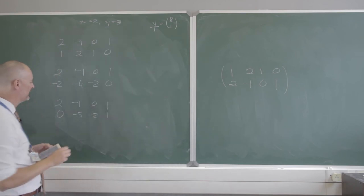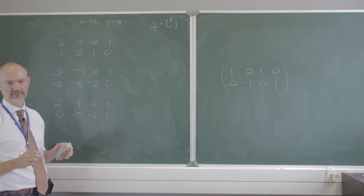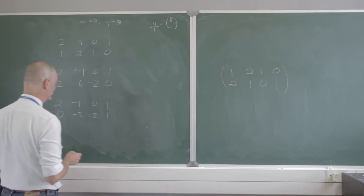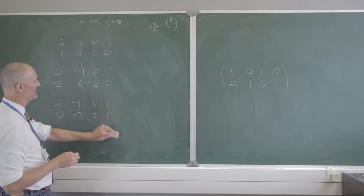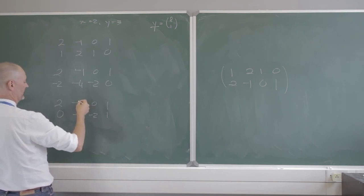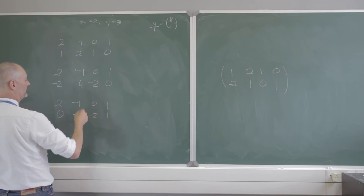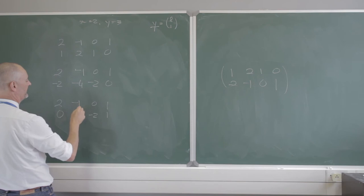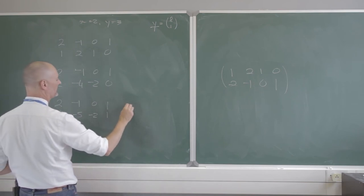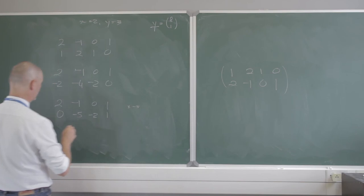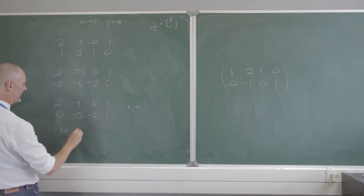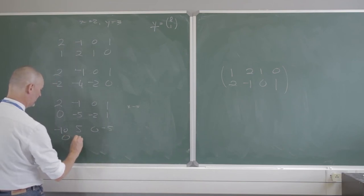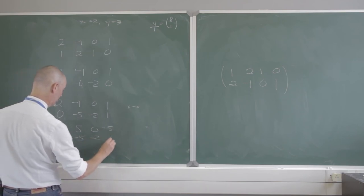So I have 2, negative 1, 0, 1 in the first row and 0, negative 5, negative 2, 1 in the second row. Now I need to eliminate the negative 5 entry. I multiply the first row by negative 5, giving negative 10, 5, 0, negative 5. Adding: negative 10 plus 0 stays negative 10; negative 5 plus 5 gives 0; that gives negative 2; and negative 4.